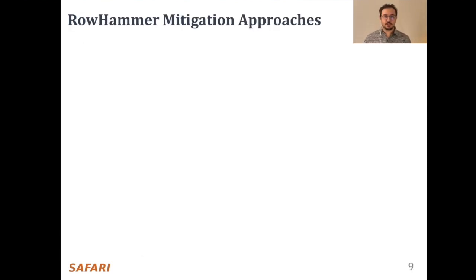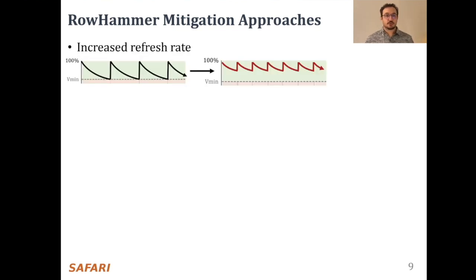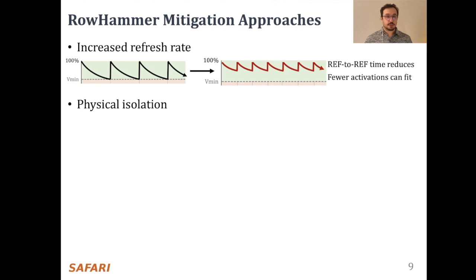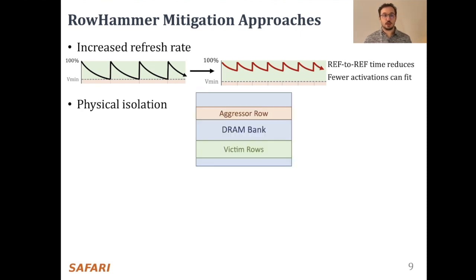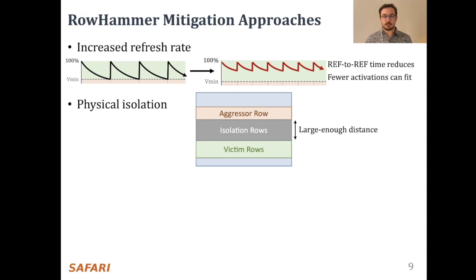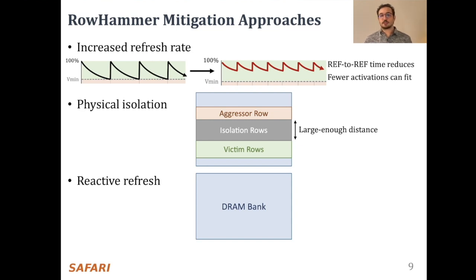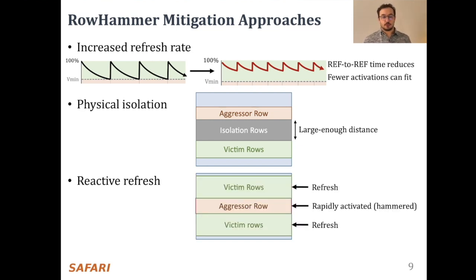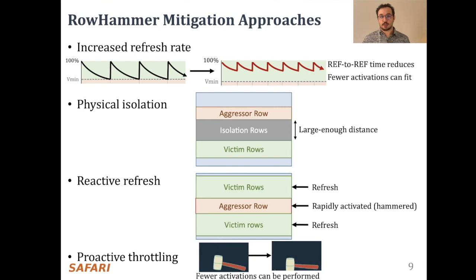Let's continue with the motivation. There are four high-level row hammer mitigation approaches. The first approach is to increase refresh rate, which reduces the refresh window, and thus the activation count that an attacker can reach in a refresh window. The second approach is to physically isolate potential victim rows with sensitive data from aggressive rows by allocating isolation rows in between. The third approach is reactive refresh: when an aggressive row is hammered, potential victim rows are refreshed to avoid bitflips. And the fourth approach suggests throttling or slowing down memory accesses proactively, such that no row's activation rate can reach the row hammer threshold.